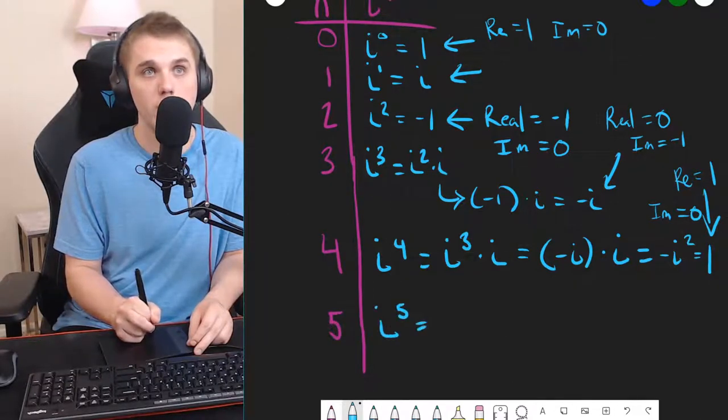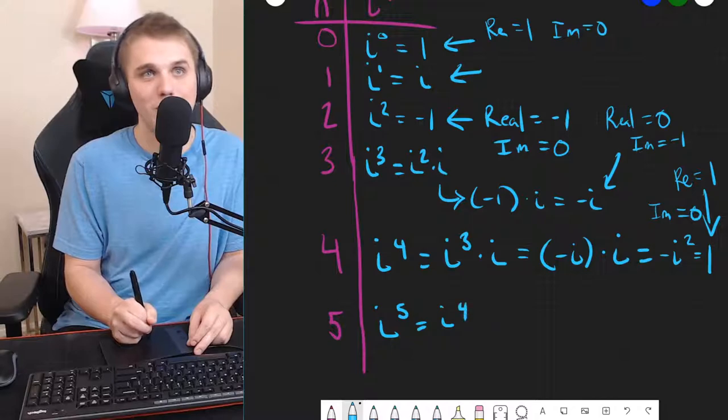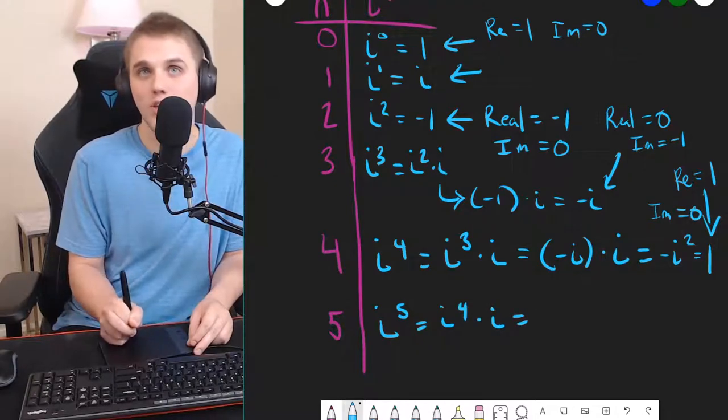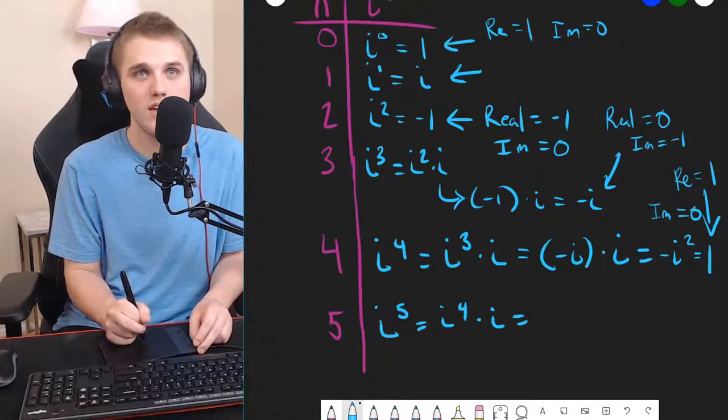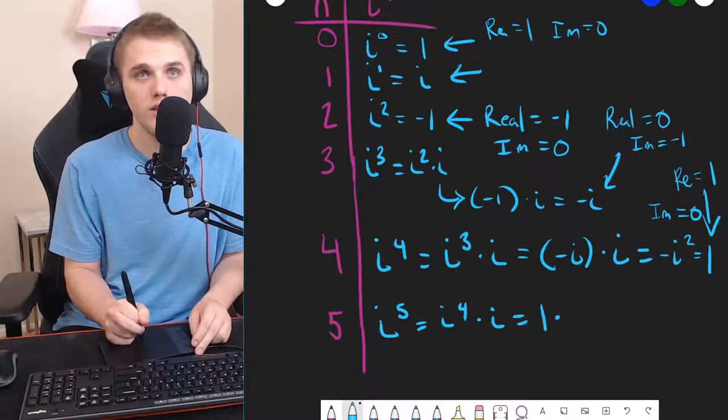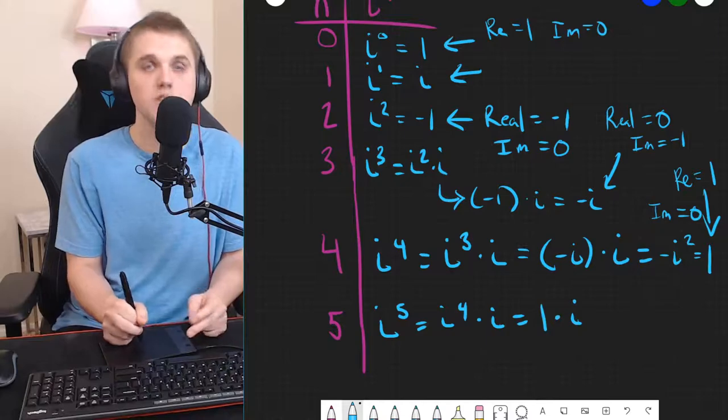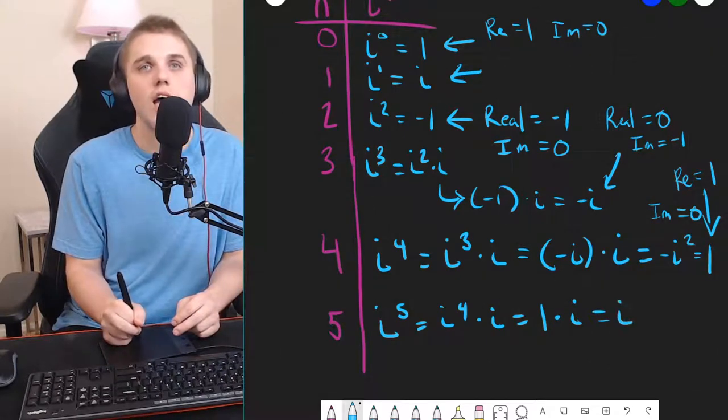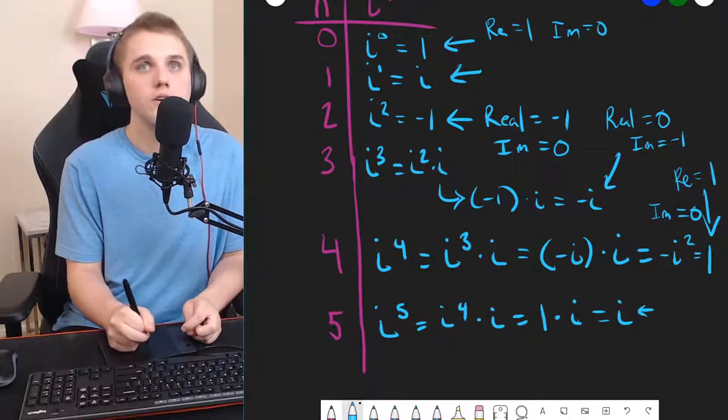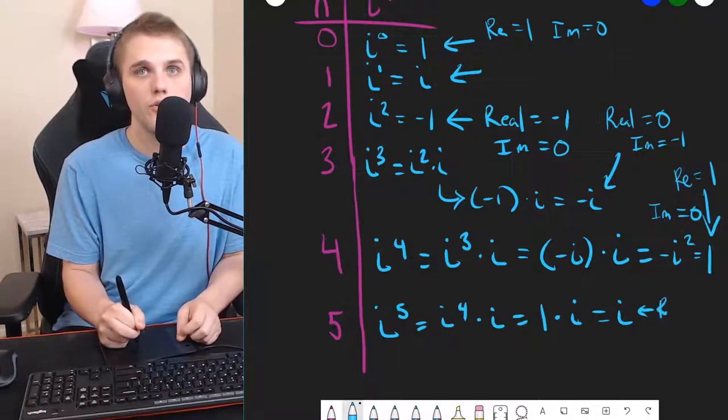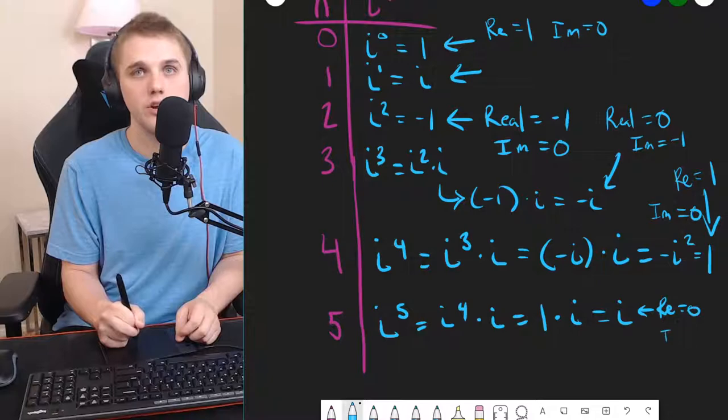So, let's go to n equals 5. Here, i to the 5th power is just i to the 4th power times i. And we do this so that we can take the result from our previous output, and we can say this is 1 times i, substitution, which is just i. And in this instance, we have the real part is 0, and the imaginary part is 1.